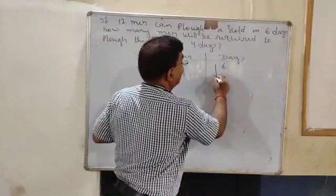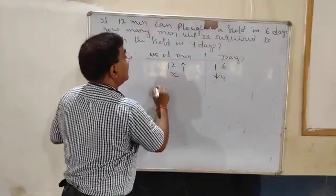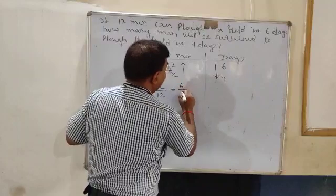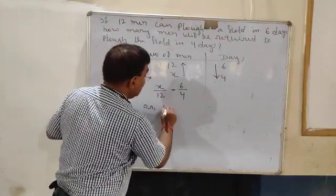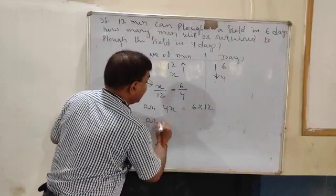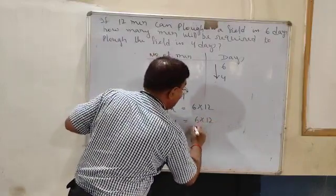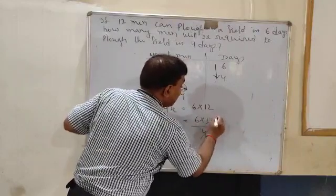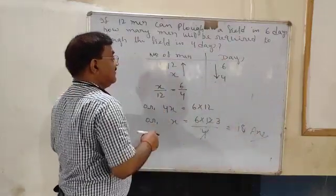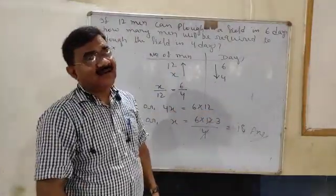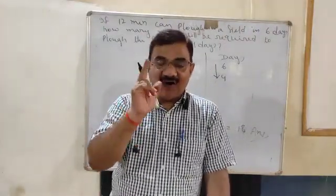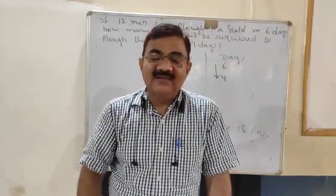Write according to this: x by 12 is equal to 6 by 4. Cross multiplication: 4x is equal to 6 into 12, or x is equal to 6 into 12 by 4. Four threes are 12 and six threes are 18. It means if you employ 18 men, the work will be finished in 4 days. This was a revision for you so that you can do well in your test. Thank you very much.